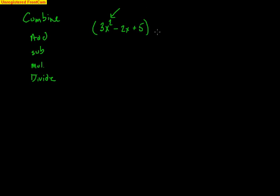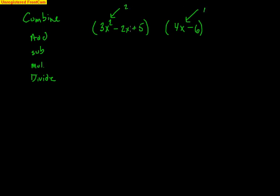Here comes another function: 4x minus 6. That is a binomial — two terms — and the largest exponent is just a 1, so that's a first degree polynomial. This one over here was a second degree polynomial.